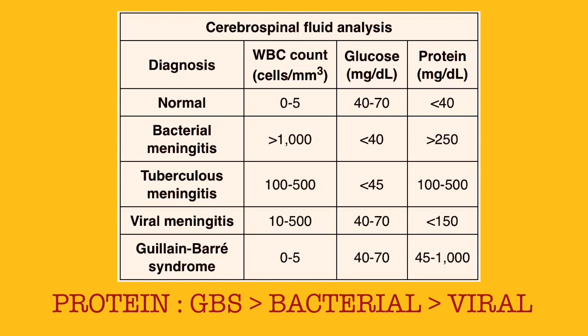Only remember the order of elevated protein amounts: CSF of GBS has the highest protein amount, while CSF of bacterial meningitis has higher protein than viral meningitis. That's all. Please provide your feedback in the comment section — stay awesome!